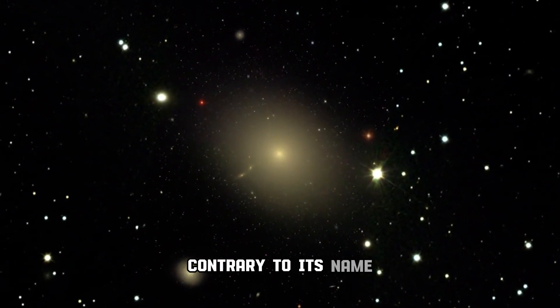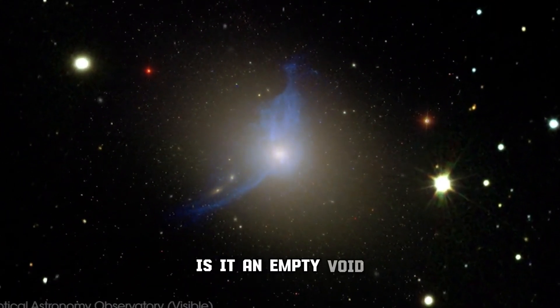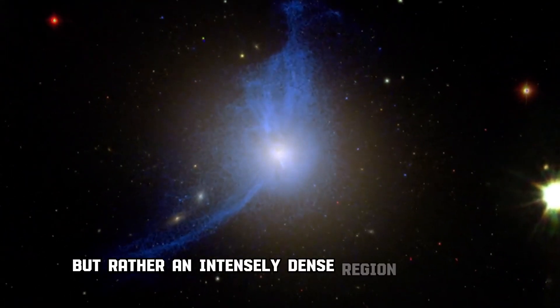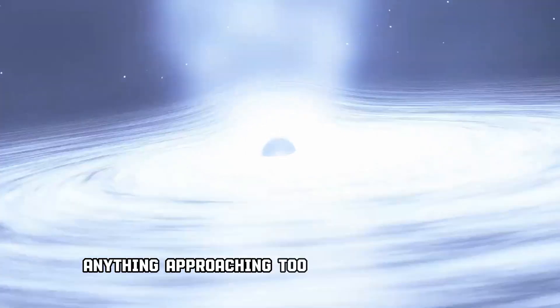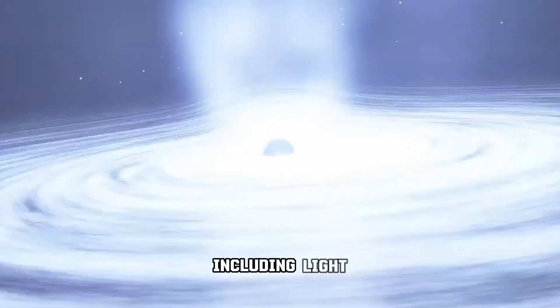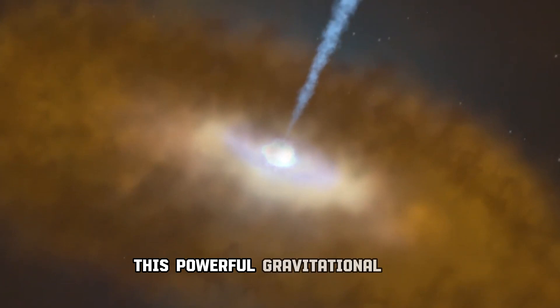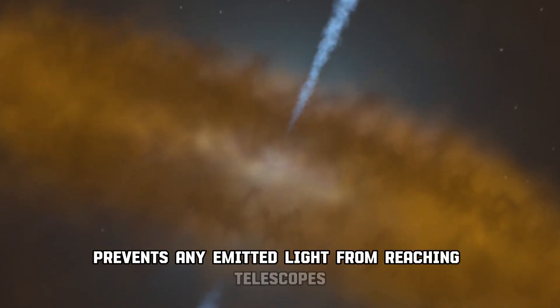Contrary to its name, a black hole isn't an empty void, but rather an intensely dense region of matter that warps space with its gravitational field. Anything approaching too closely is trapped, including light. This powerful gravitational pull prevents any emitted light from reaching telescopes.